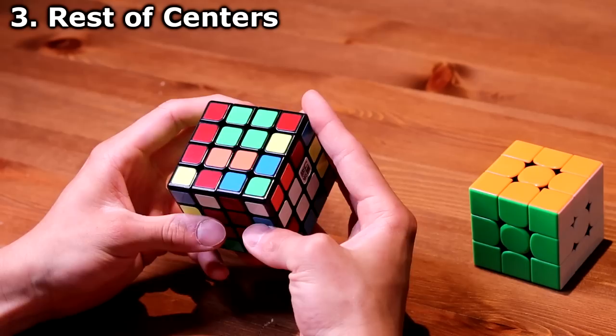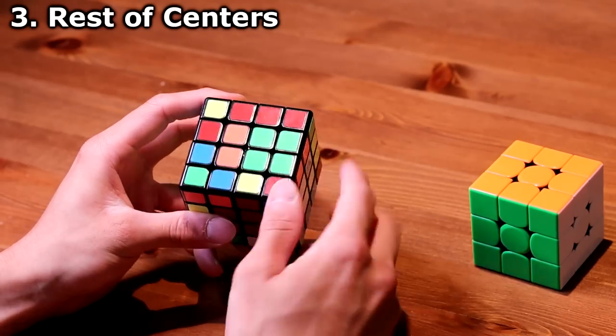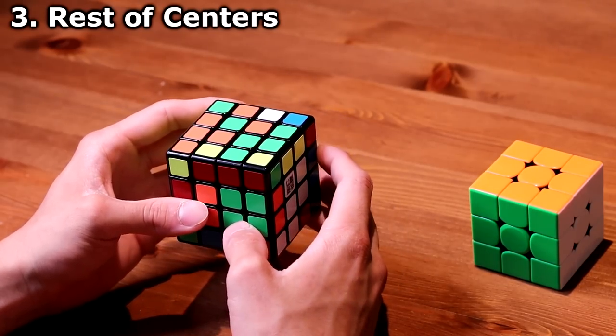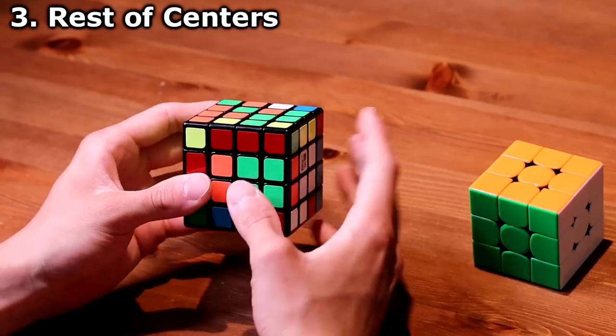I see I have 2x1 block center, green center already made, but the other block is not made. So what I can do, move this piece out of the way,